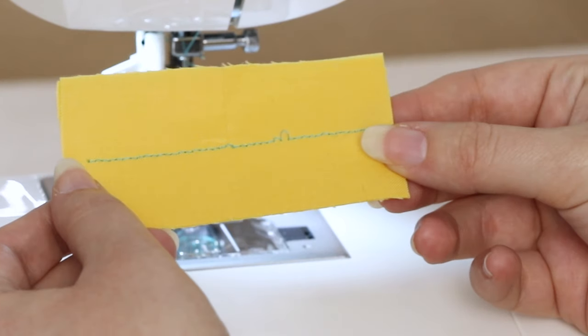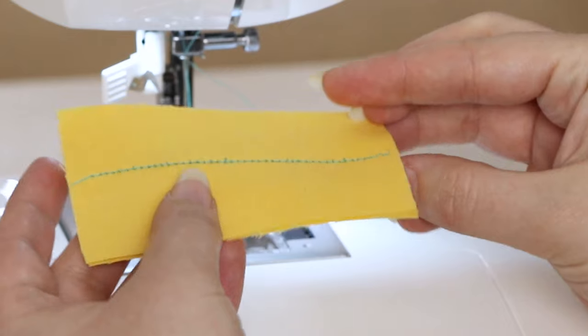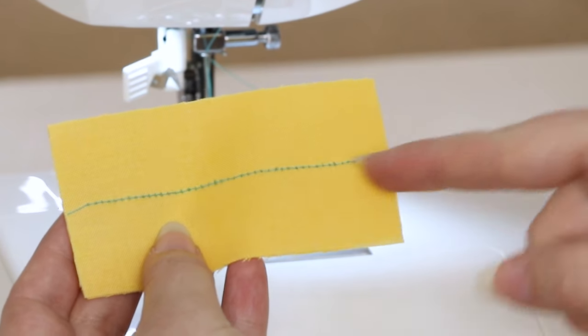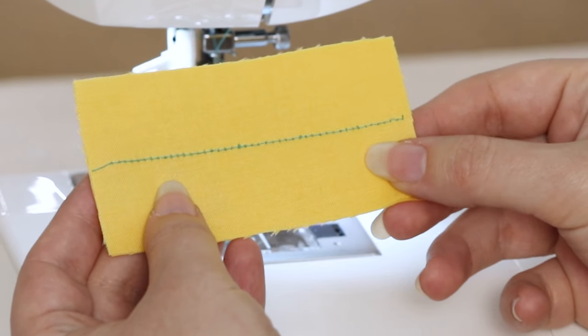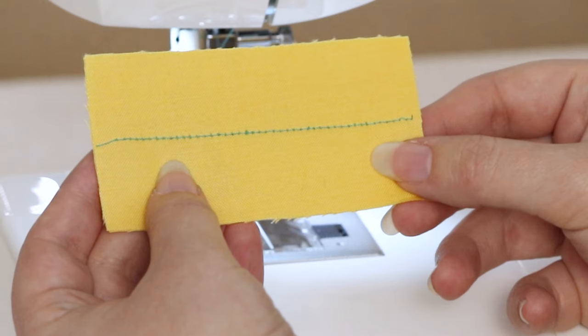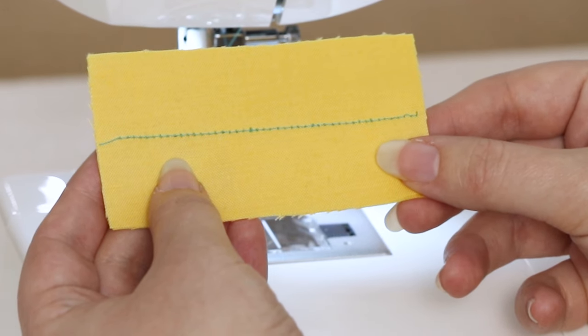If your stitches look something like this on the top and loopy, irregular, or full of thread on the back, then you'll need to re-thread your upper thread. You can also check your instruction manual.